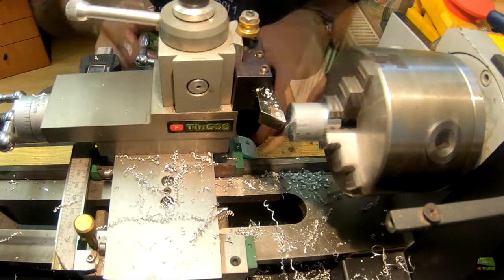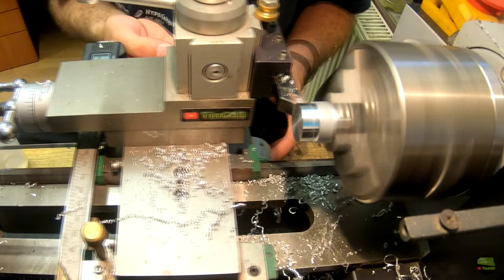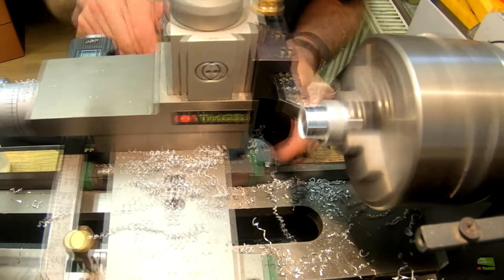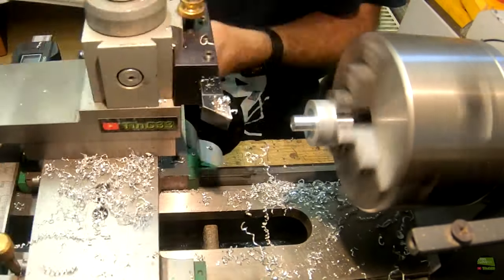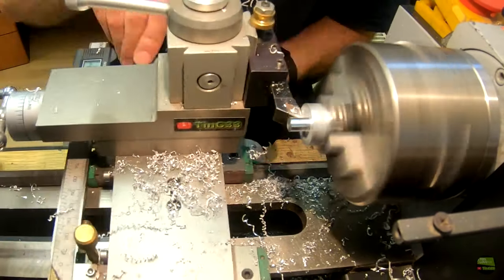I repeat that step on the other side. I make here an axis about 10mm long and 8mm diameter. I want that diameter precise, so it will slip easily into the clamp but still hold solid when tightened.